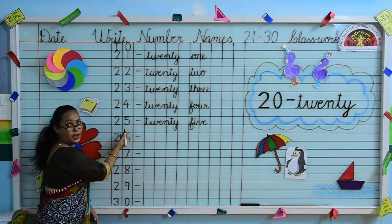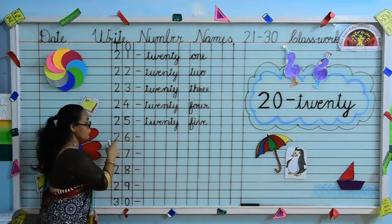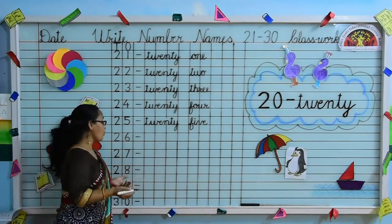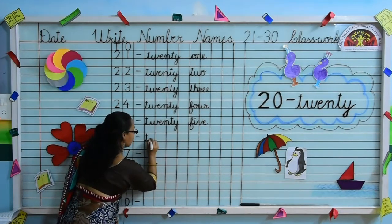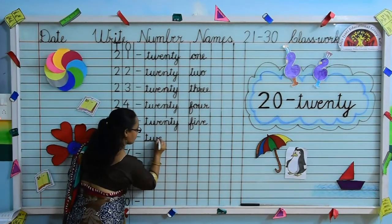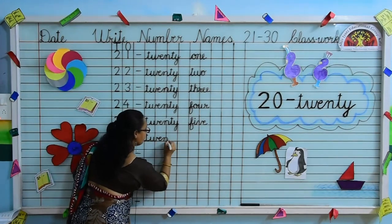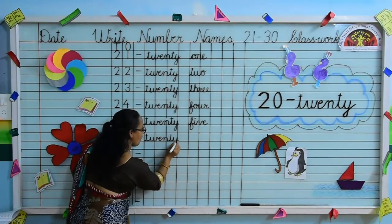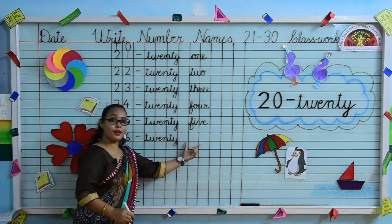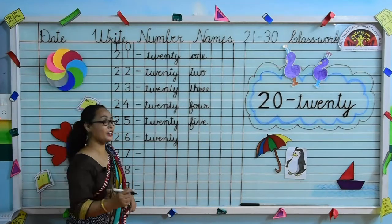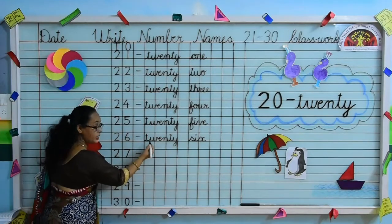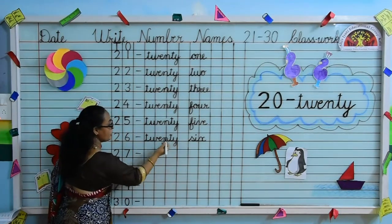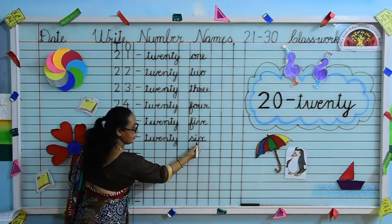Now what comes after 25? Yes, 26. 2, 6 — 26. Write the spelling of 20. T-W-E-N-T-Y, 20. Yes, what we will write here? The spelling of 6. Very good, kids. S-I-X, 6. T-W-E-N-T-Y, S-I-X, 6.